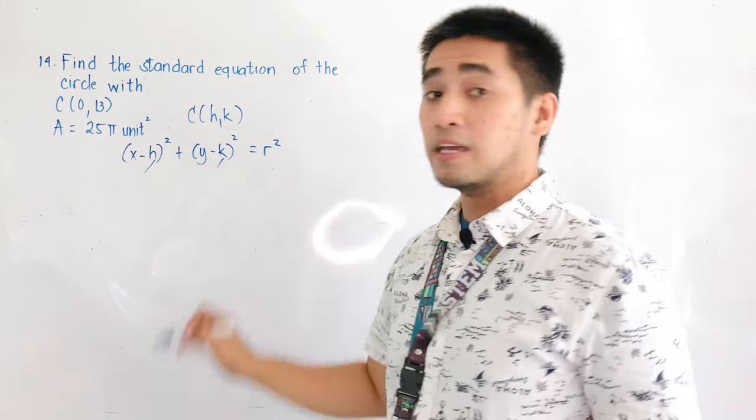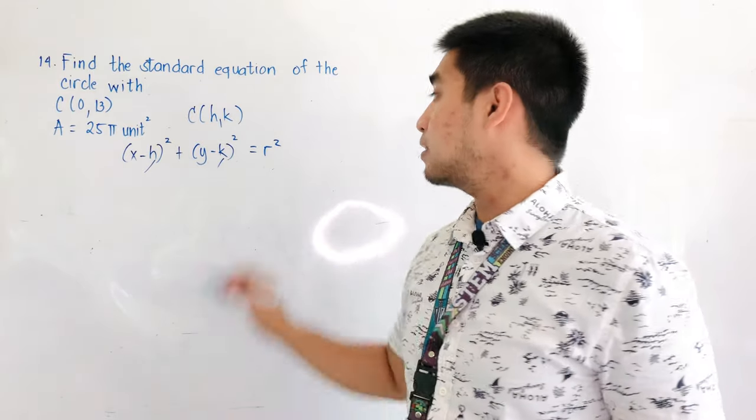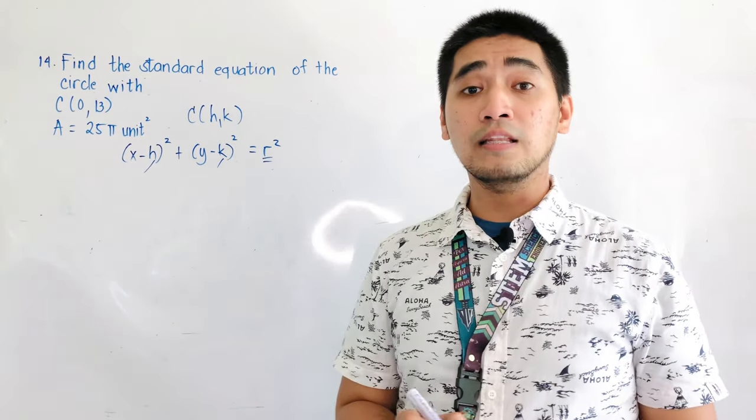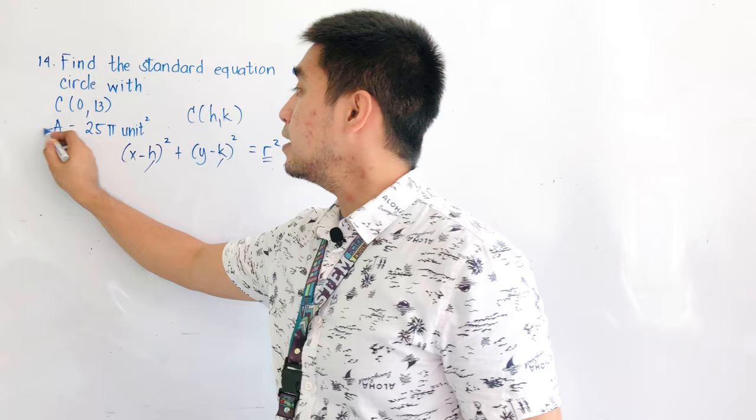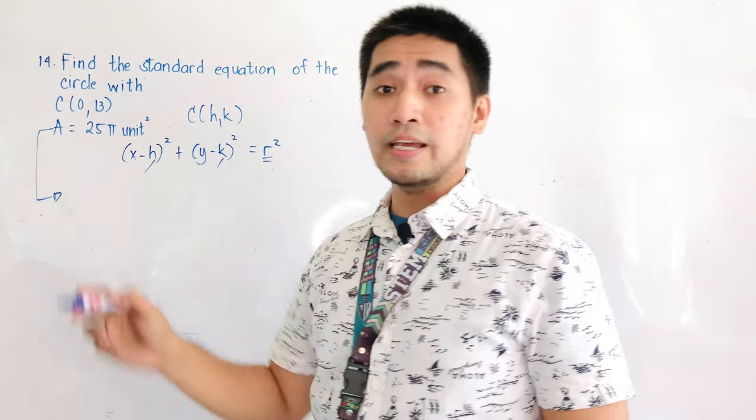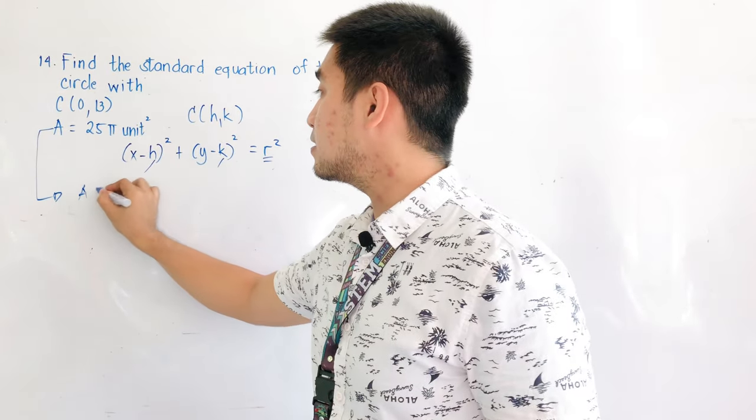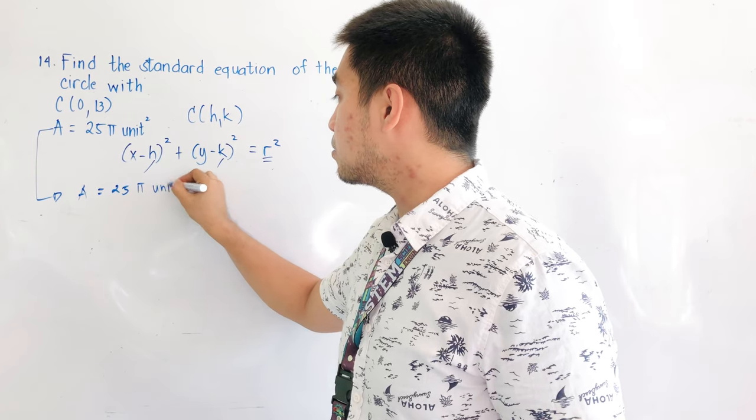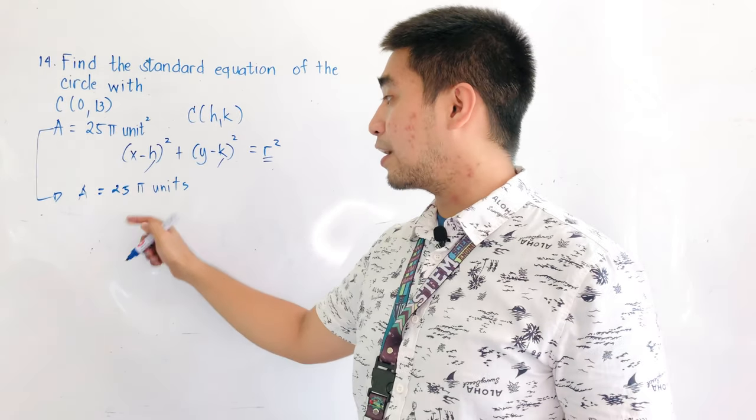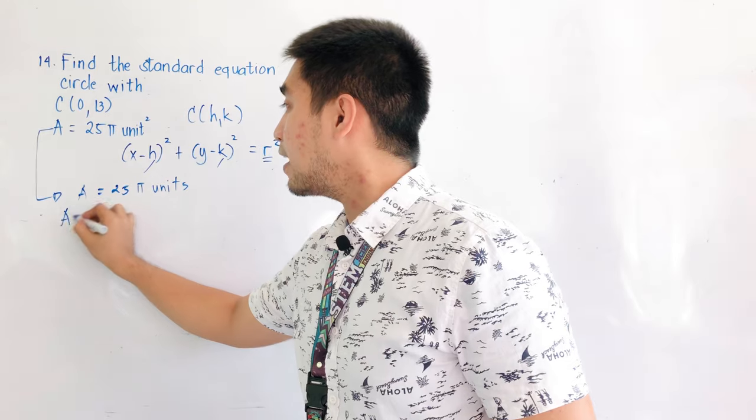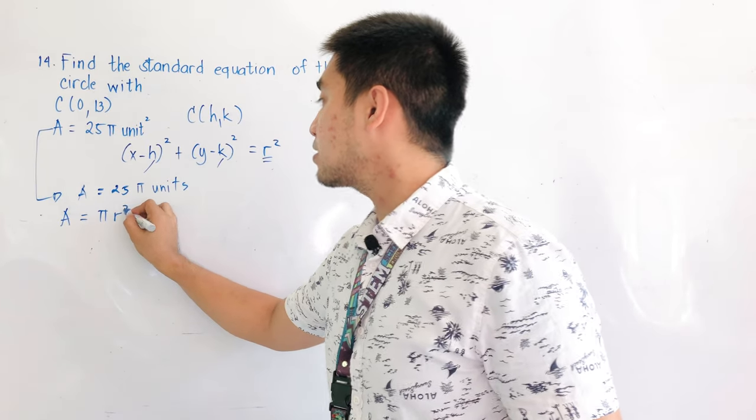we have h, we have k, but we have to find r squared. And how do we get r squared? By simply getting r using the area. And that the area is equal to 25 pi units squared. So how do we get r? Always remember that area is equal to pi r squared.